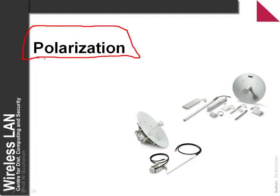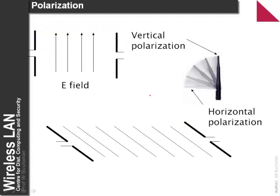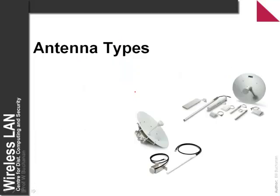Another key term is polarization. We need to define which plane the electric field is in, then point the antenna in that plane to pick up most of the field. If the antenna is at 90 degrees to the E field, we might get zero signal strength. If the E field is pointing upward, we also point the antenna upward — this is vertical polarization. For a horizontally polarized antenna, we orient it horizontally.